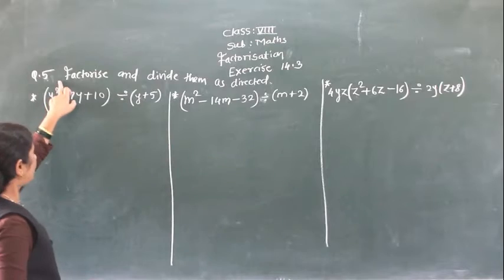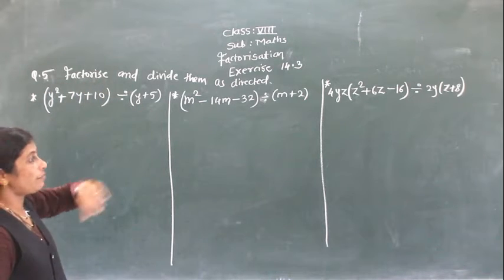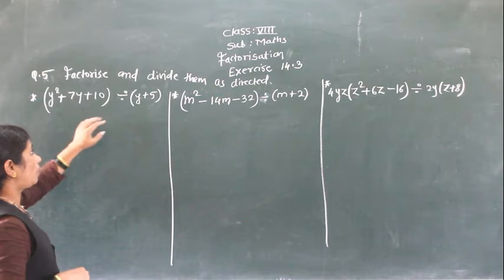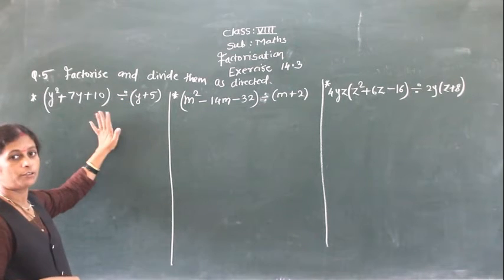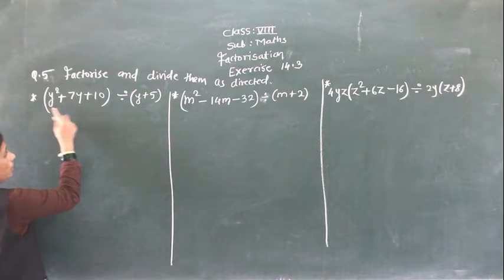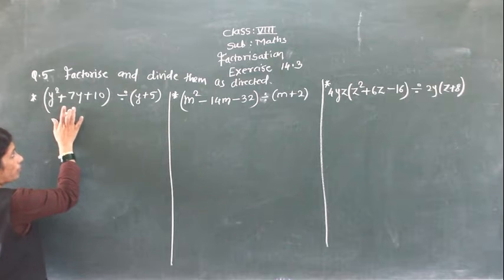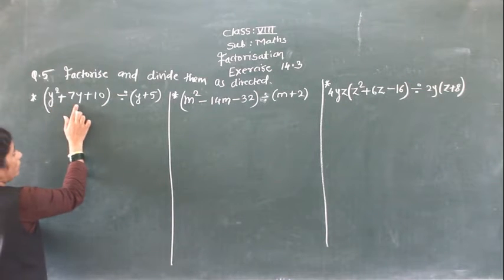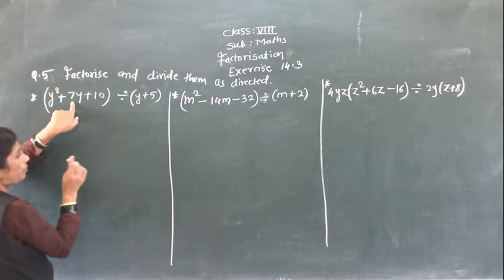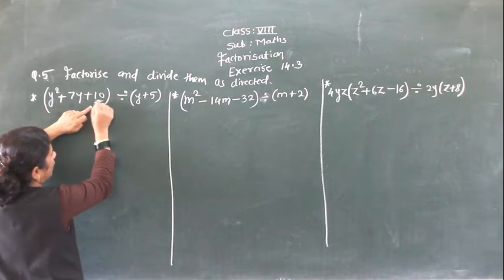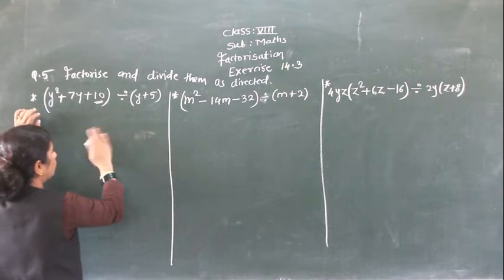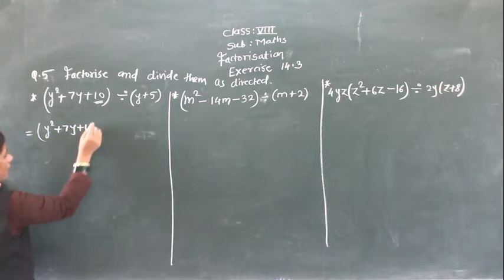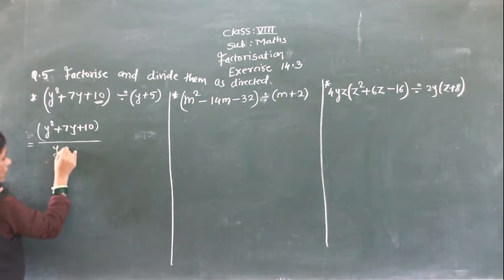Question number 5: afterwards we have to do the division. First we will see if we can divide — are the factors here? No. So first we have to find the factors of this algebraic expression. We have this in the form y square plus 7y plus 10. So we will write here: y square plus 7y plus 10 divided by (y plus 5). First we have to find the factor of this algebraic expression.